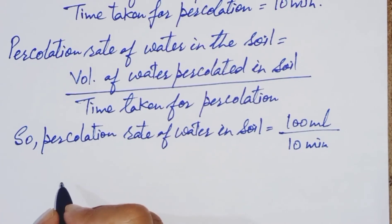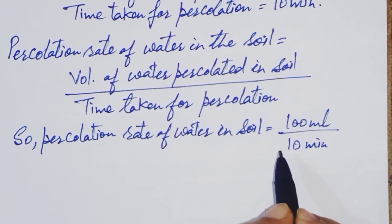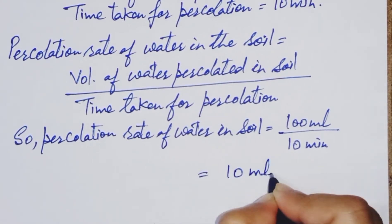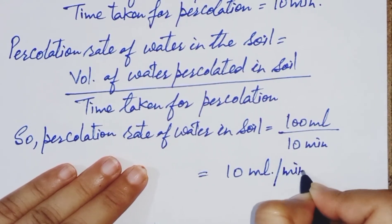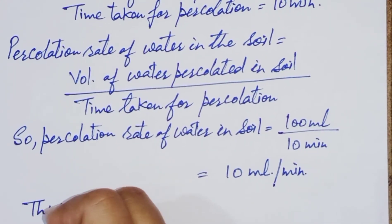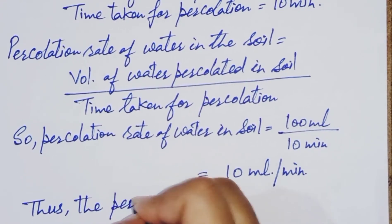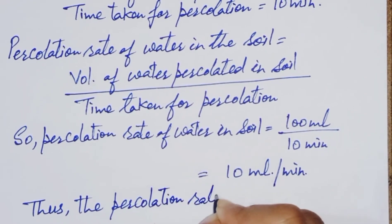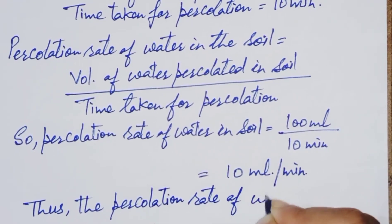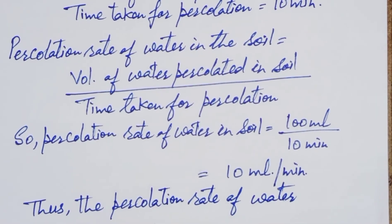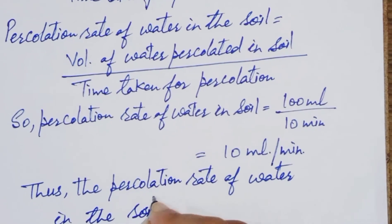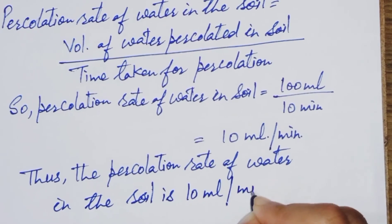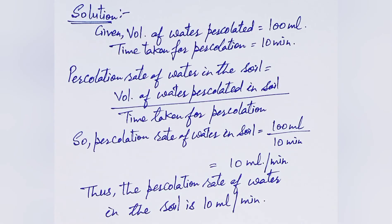Now divide 100 by 10, you will get 10 ml per minute. Thus, the percolation rate of water in the soil is 10 ml per minute.